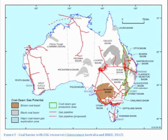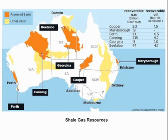Coal basins in Australia show potential sources for coal seam gas, with a fair preponderance in the eastern states through Queensland, parts of New South Wales, Victoria, and also in South Australia in the Poderka, Akaringa, and Cooper basins. If we look at the shale gas picture, it's a little bit different, and this picture is not complete, but there's already a huge potential for shale gas across Australia.